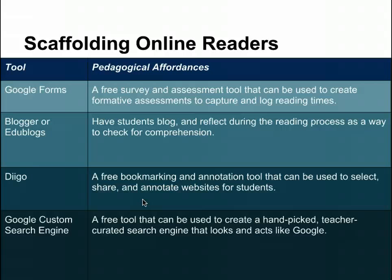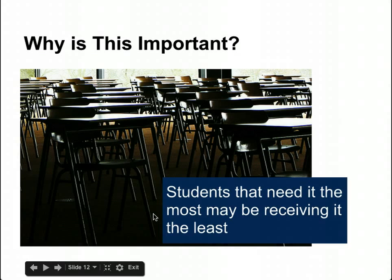There are multiple tools we can use to scaffold this process. One thing to keep in mind is that we're looking at student learning objectives — we're not focused on the tool itself. Google Forms is an opportunity to create formative and summative assessments. We can have students blog about the process. We can use DGO to have them highlight and annotate texts. And Google Custom Search is a great tool to scaffold an internet search or a piece of information for students.